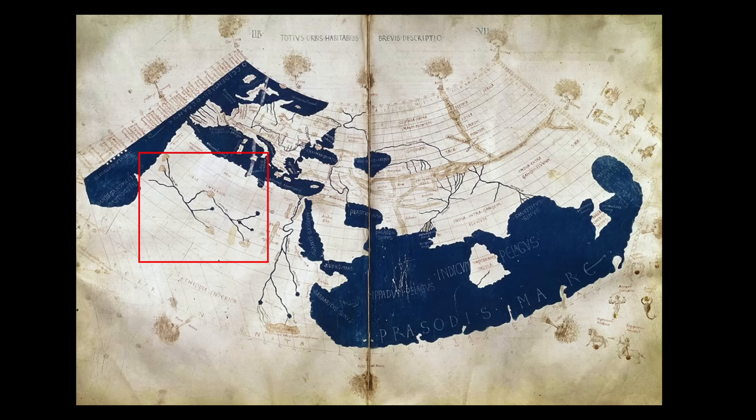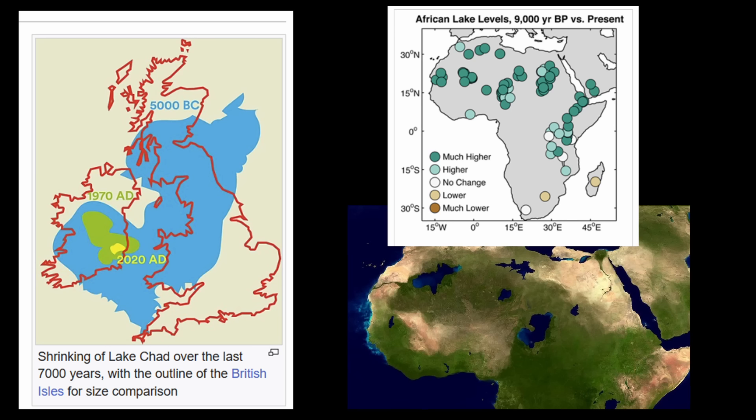We also have maps from Roman times which depict several lakes and large river systems across the Sahara. We can also see the remains of these ancient lake beds, and as you can see on the chart on the right, these were spread all throughout what we know as the Sahara Desert today. In the center of the Sahara was Mega Lake Chad, which is similar in size to the entire United Kingdom.